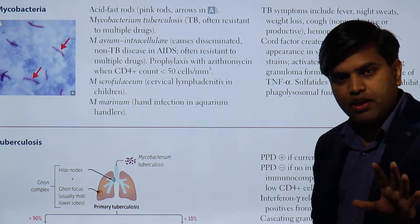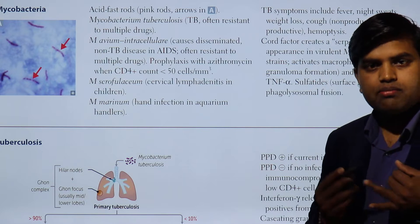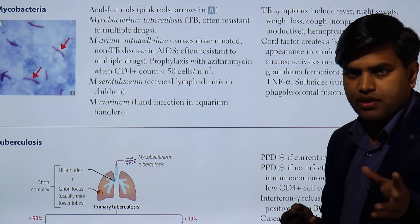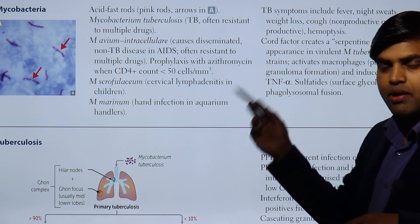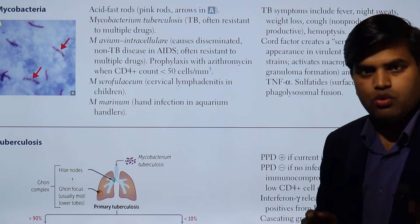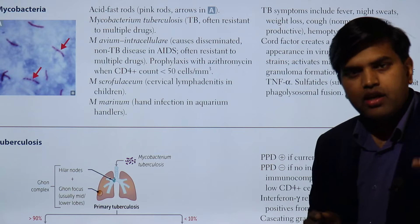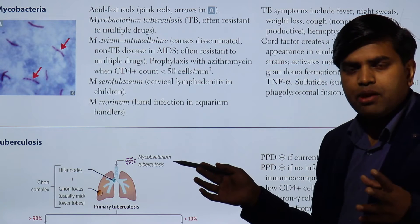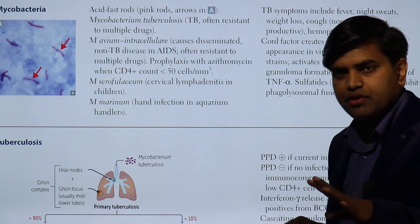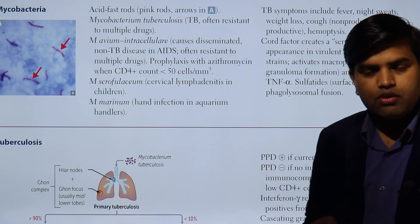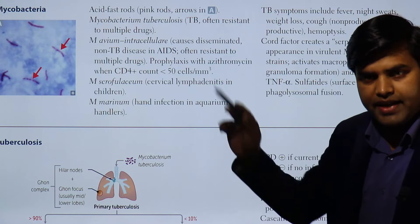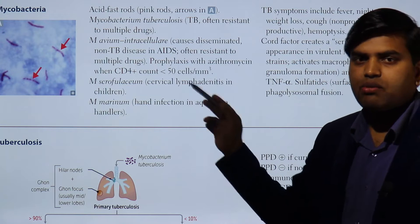Acid-fast organisms include mycobacterium tuberculosis, mycobacterium leprae, Nocardia species (previously discussed), and a few Coccidia parasites. Among them, mycobacterium tuberculosis does not lose its color even after 20% sulfuric acid, whereas mycobacterium leprae only resists 5% H2SO4 and Nocardia only 1%. So at 20% everything will be colorless except mycobacterium tuberculosis.